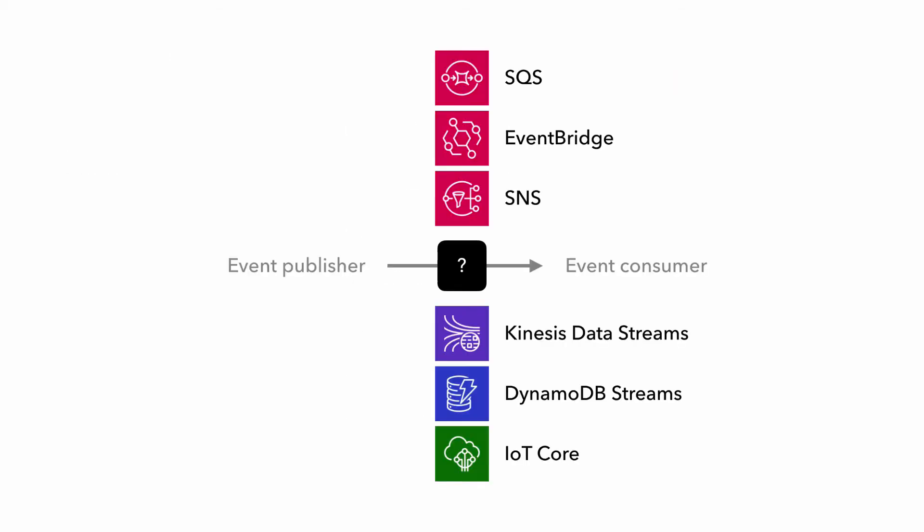And that brings us to the first challenge with testing event-driven architectures: with all the different messaging services available to us, there are a lot of different variables to consider. Each service has its caveats, and as you've seen in previous chapters, we often have to adapt our testing strategy around the services we use and take their constraints into consideration.